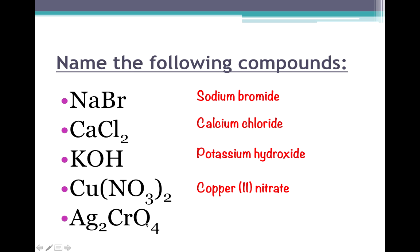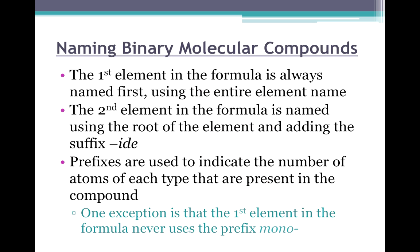The last example again has three capital letters. The last two make up the polyatomic and from the chart that is named chromate. Silver is in the dungeon — the D block — but when you check the chart, silver does not have more than one charge, so you do not need Roman numerals. So this compound is named silver chromate.